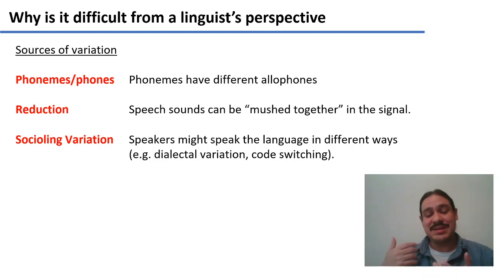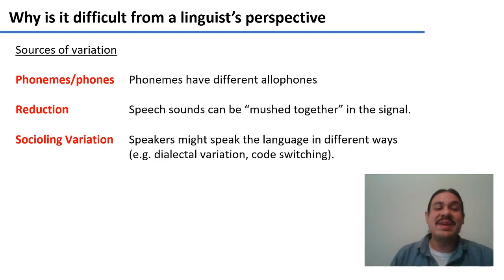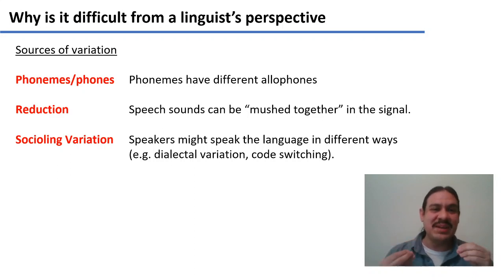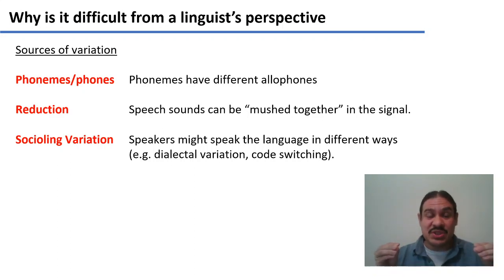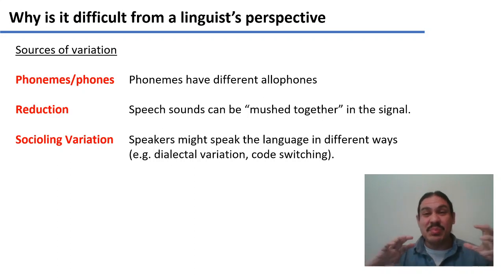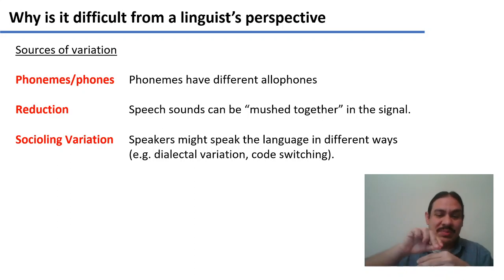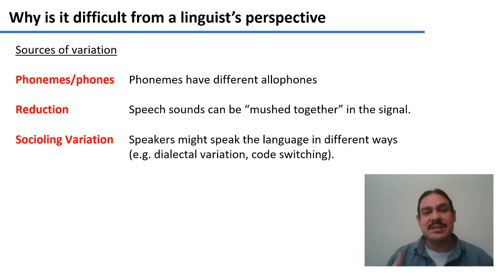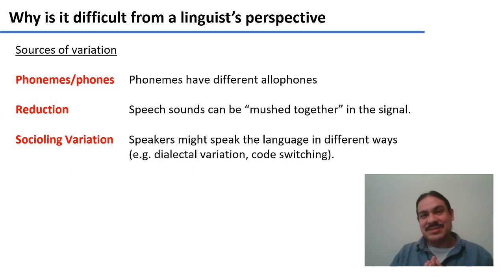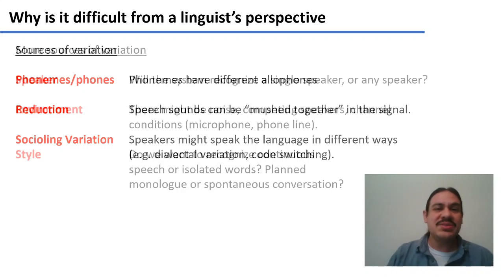We've been talking about phonetics and phonology and why these present challenges to speech recognition. To summarize: we studied several sources of variation in the audio signal. Sounds might differ because a phoneme can have more than one allophone — for example, the T is pronounced in different ways in English depending on its position in the word. Sounds can be reduced or mushed together in the signal. There's also variation due to sociolinguistics, dialectal variation, and code-switching — for example, a speaker switching between English and Hindi.